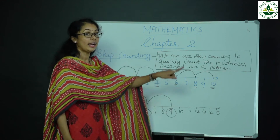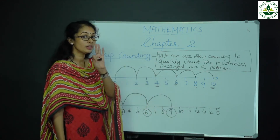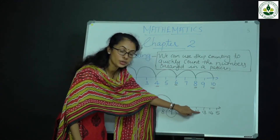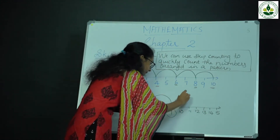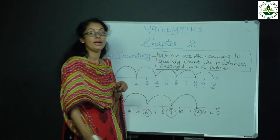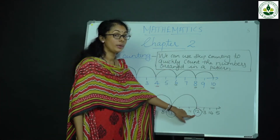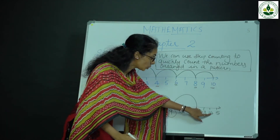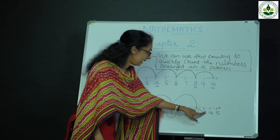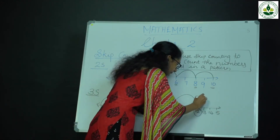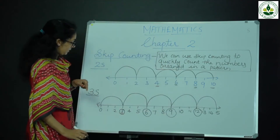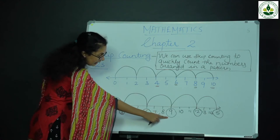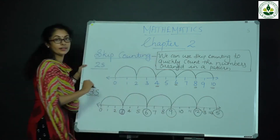Then again count 3 times: 1, 2, 3 — 10, 11, 12. Next number is 12. Then 3 times again: 1, 2, 3 — 13, 14, 15. So the pattern is 3, 6, 9, 12, 15.